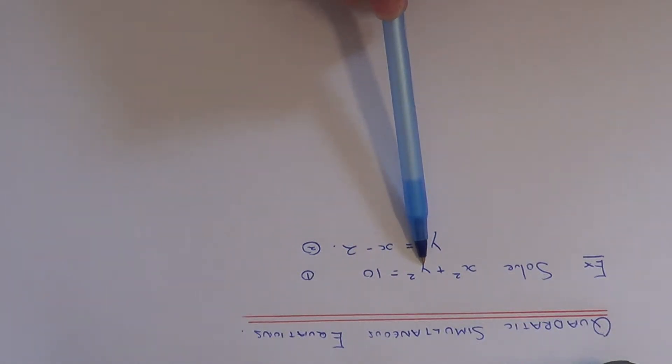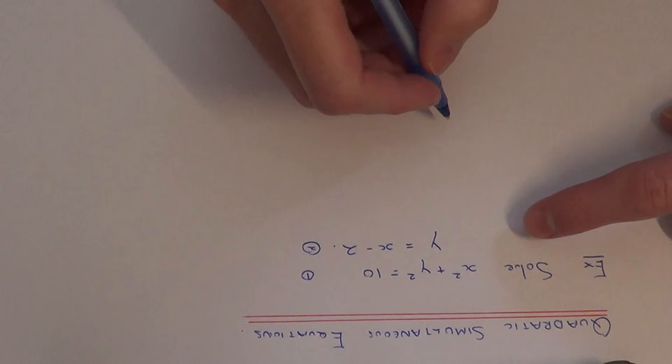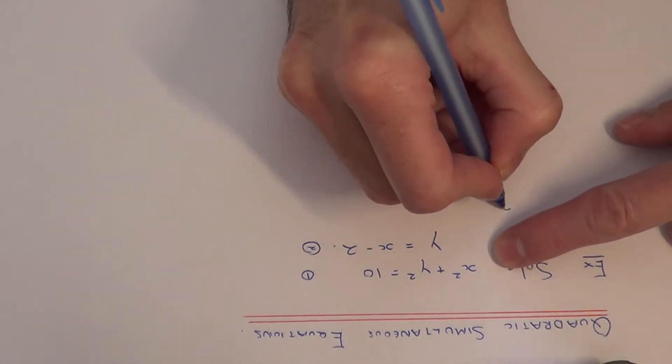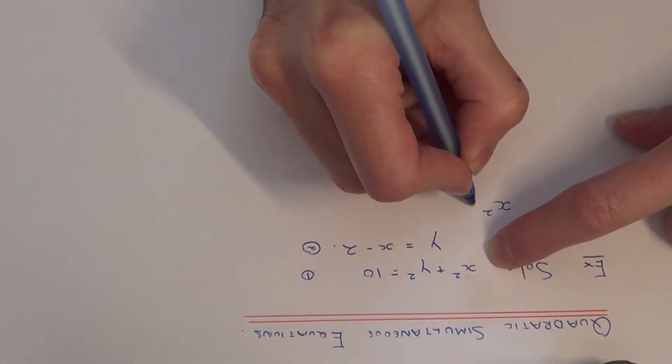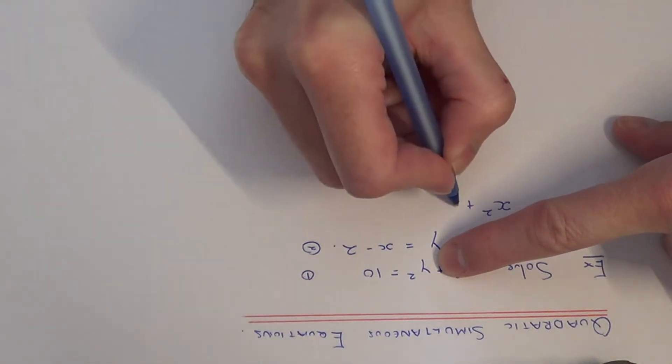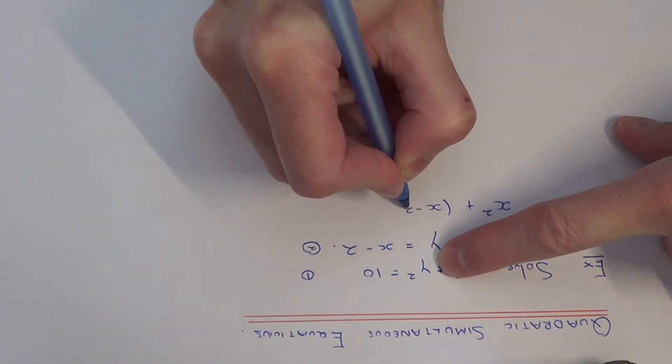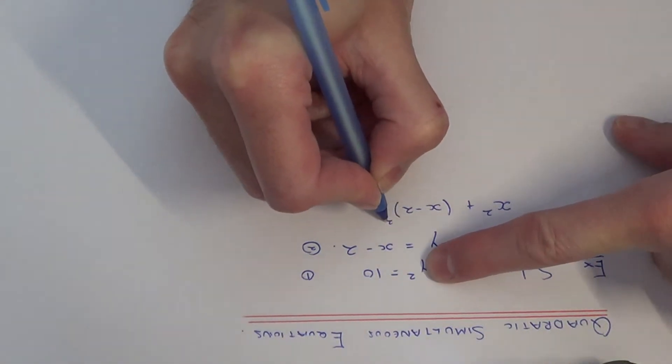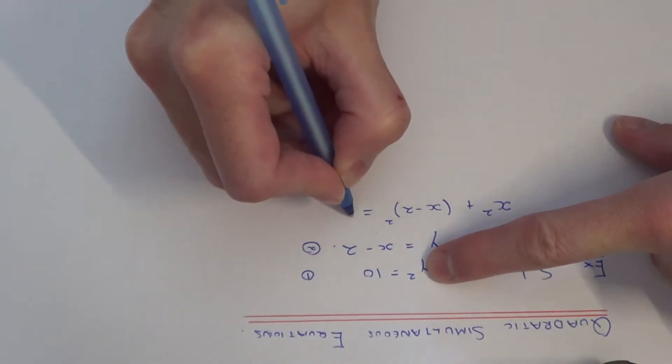And when you do it, just put the x minus 2 in a bracket because we need to be very careful. So let's just do this. We've got x squared plus, so y is being changed to x minus 2, and that is squared, and that's equal to 10.